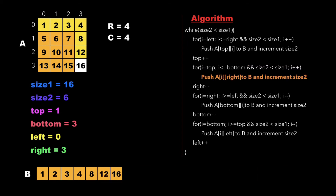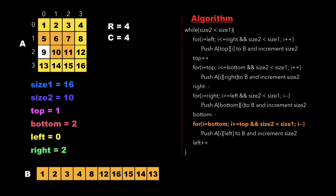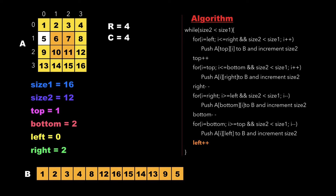We've reached a condition where i is equal to bottom, so we run out of the for loop and decrement the value of right, then start the third for loop from i equal to right to left and push the corresponding elements into array b, i.e. we push 15, 14 and 13. Now we've reached a condition where i is equal to left, so we run out of the third for loop and decrement the value of bottom. We start the fourth for loop where i points from bottom to top, and we push 9 and 5 to array b. Finally we increment the value of left.